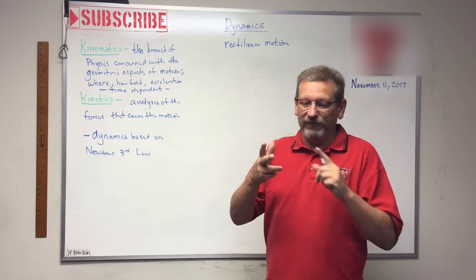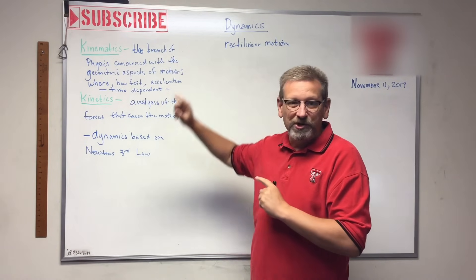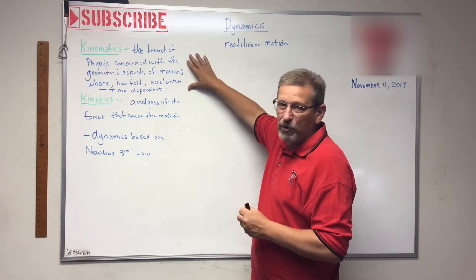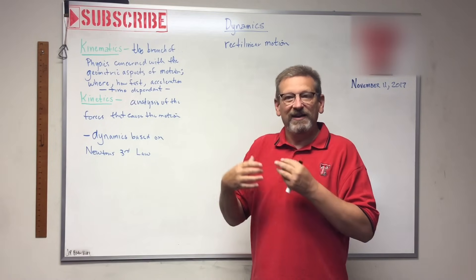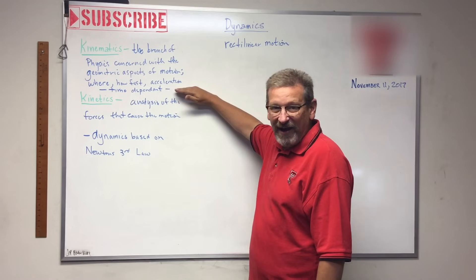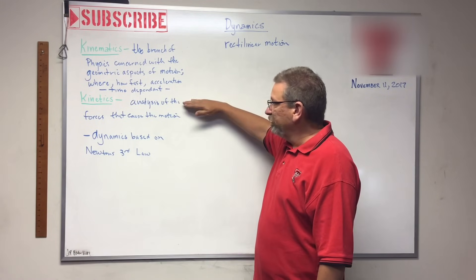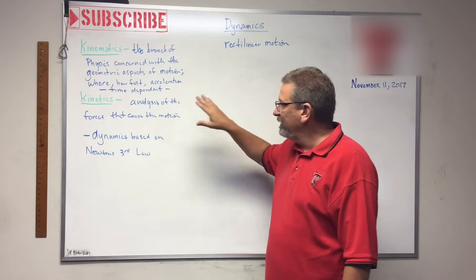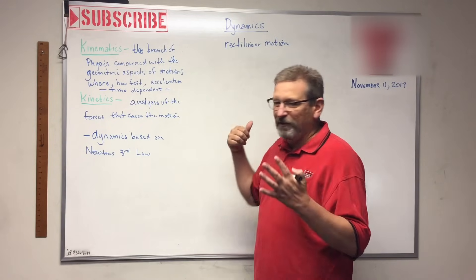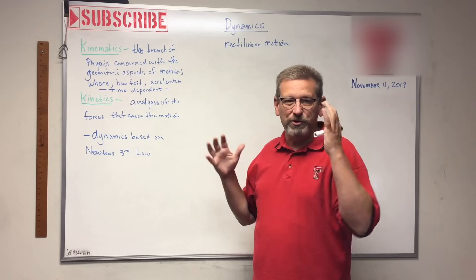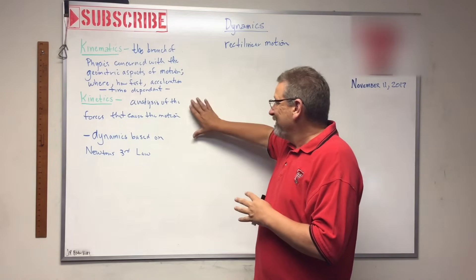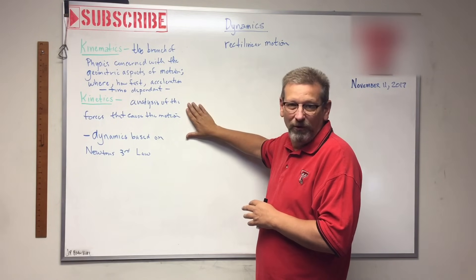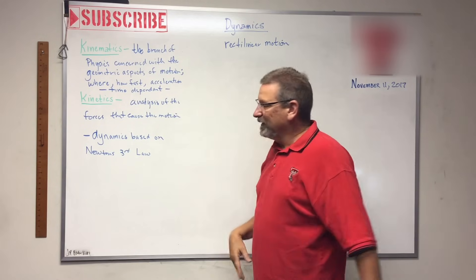Dynamics basically consists of two portions: a kinematics portion and a kinetics portion. Kinematics is the branch of physics concerned with the geometric aspects of motion — like where a particle is, how fast it's moving, whether it's accelerating — and all those things are time dependent. Later on in the series, about halfway through, we'll switch over to kinetics and start talking about an analysis of the forces that cause the motion, whether that's a collision, a spring imparting motion, or some other cause. Students generally don't have too hard a time with kinematics — it's pretty understandable. Kinetics is generally where the wheels fall off.